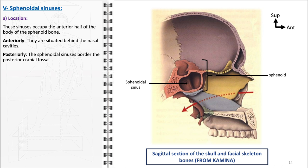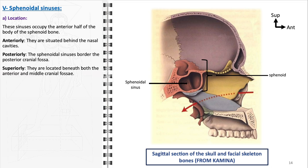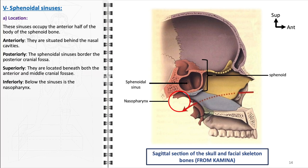Posteriorly, the sphenoidal sinuses border the posterior cranial fossa, which is significant especially in the context of infections or tumors that may arise within the sinuses. Superiorly, their location beneath both the anterior and middle cranial fossa places them in proximity to vital brain structures and major blood vessels. For example, sphenoid sinusitis can potentially lead to complications involving the optic nerve or the pituitary gland. Inferiorly, below the sinuses lies the nasopharynx, which is important for the drainage of the sphenoidal sinuses and for understanding the spread of infections or malignancies between these regions.